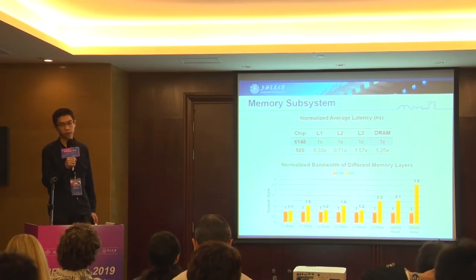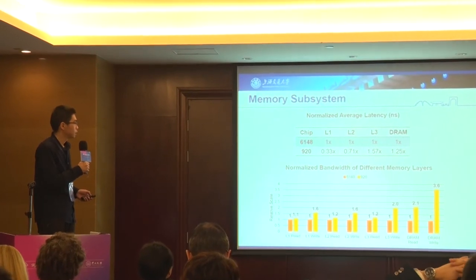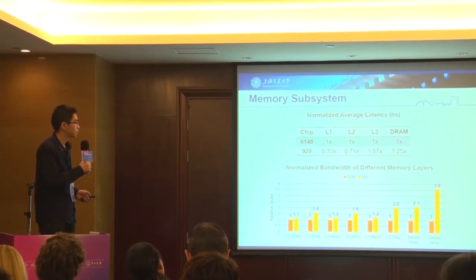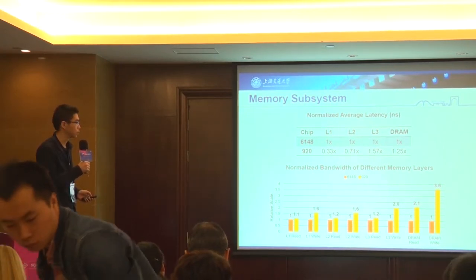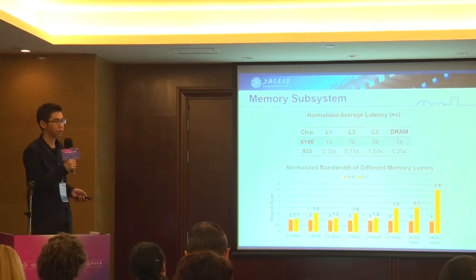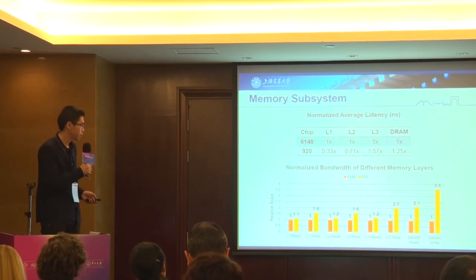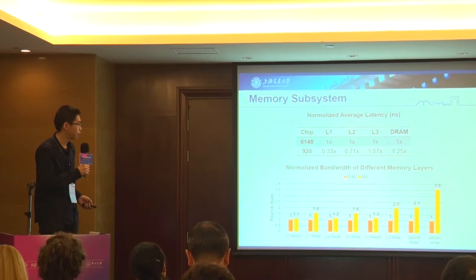But it does have its advantages. The 920 has less latency than the 6148 on L1 and L2 cache, and a slightly higher latency on L3 cache because the L3 cache is shared by four cores. But the key point is: by trading off latency, Huawei's chip achieves a higher bandwidth compared to Intel's chip.